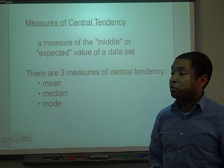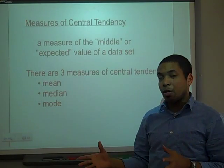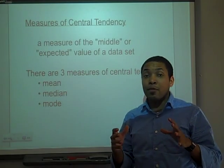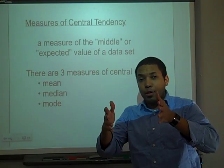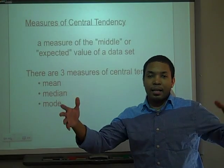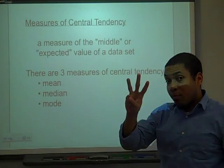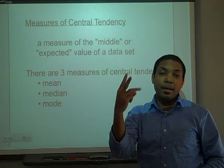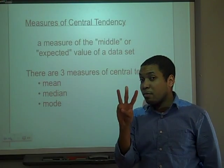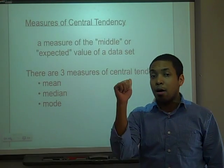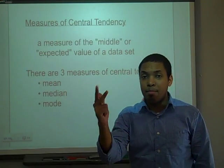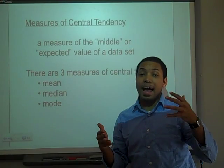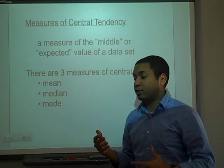There are three measures of central tendency, and before I move into those, I want to let you know what central tendency means. It means the measure of the middle, or the typical value that we would expect in a data set of numbers. The three measures of central tendency are mean, median, and mode. We're going to go into each in detail and figure out how we arrive at these statistical measures.